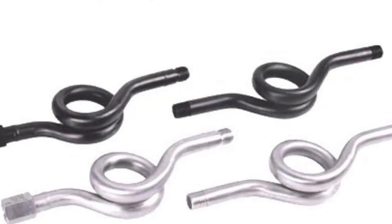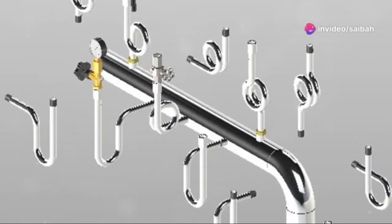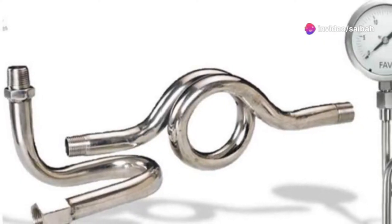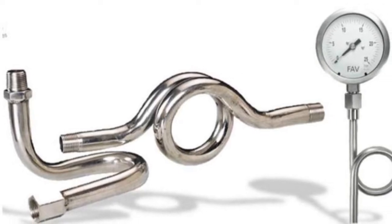Now, let's talk materials and specs. A typical pressure gauge siphon is usually made from carbon steel. It's rated at 48 bar or 700 psi and can handle temperatures up to 230 degrees Celsius.